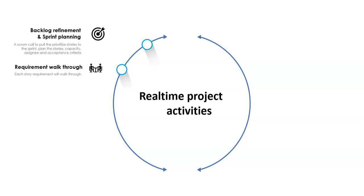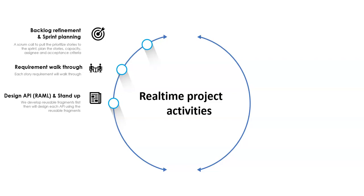After that, the next meeting that happens is sprint planning. As part of this meeting, the scrum master will gather each developer's capacity, then assigns stories to each developer. Then the analyst will take the developer through the requirement walkthrough.